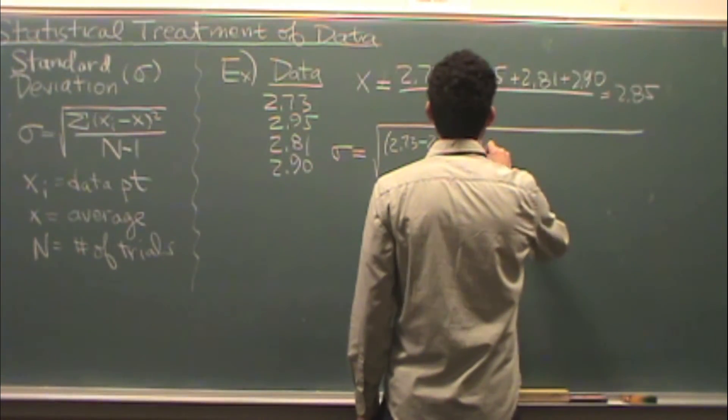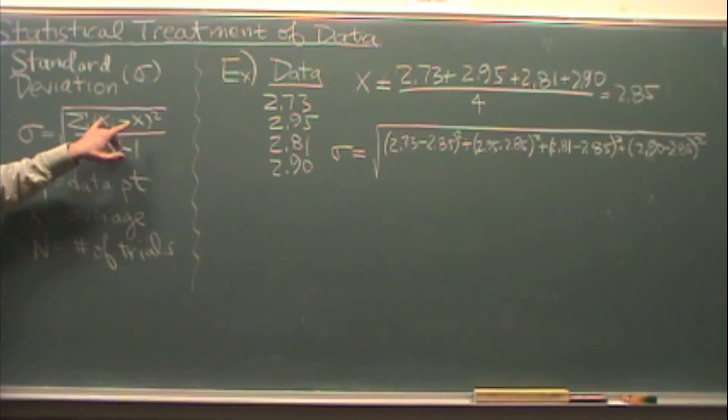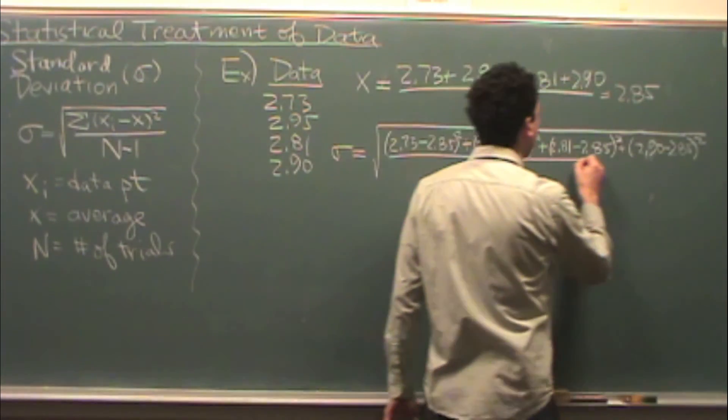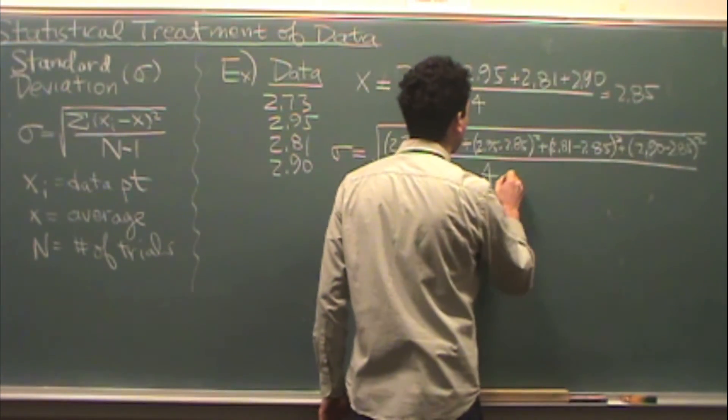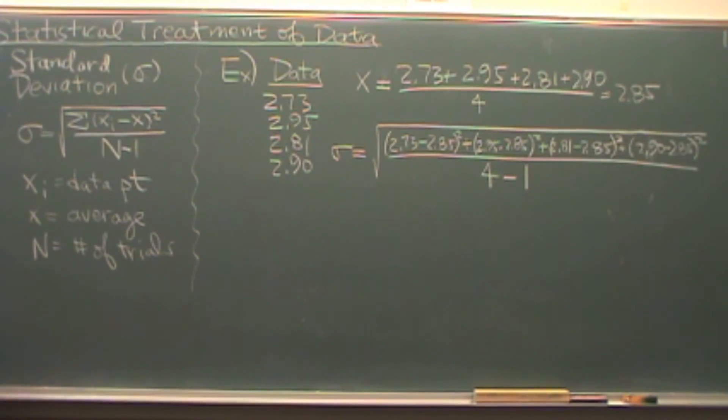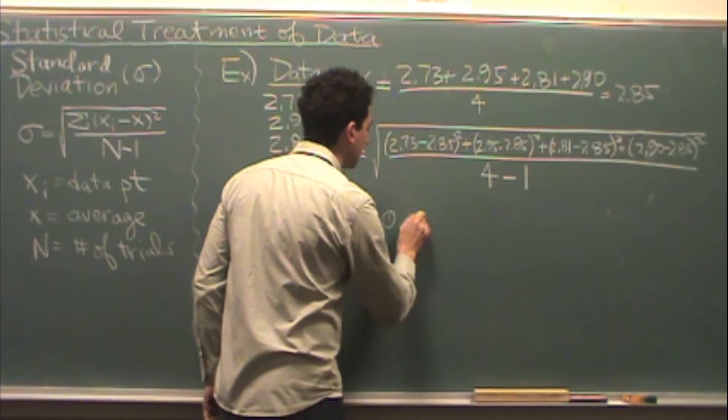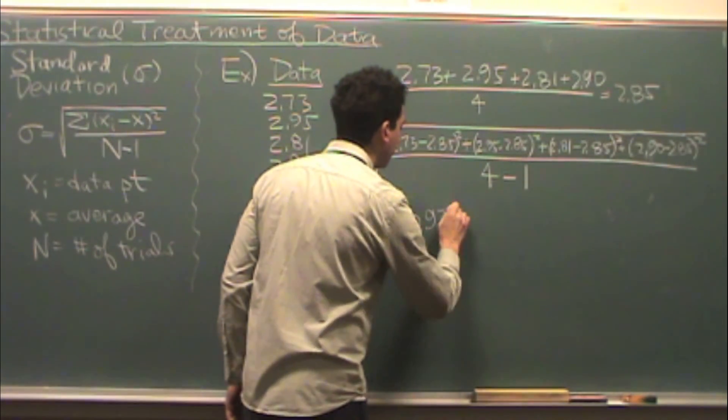and I'm going to do that for every single data. After I get all the data points subtracted from the average squared, I'm going to divide it by n minus 1. The total number in my case of trials is 4, so I subtract 1. When I did this calculation, I got 0.0975.